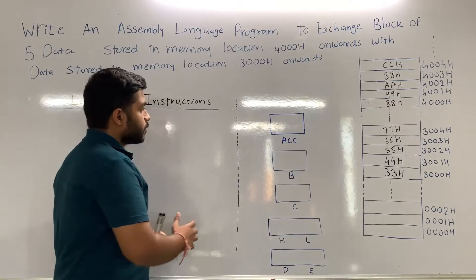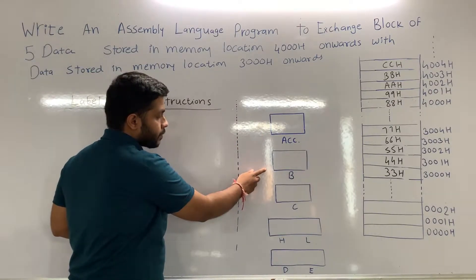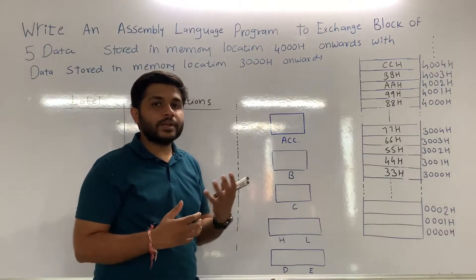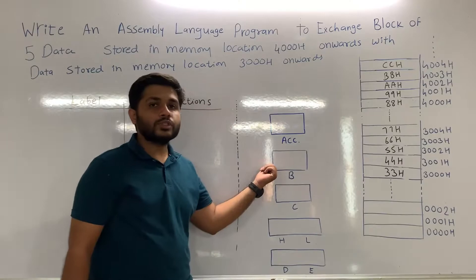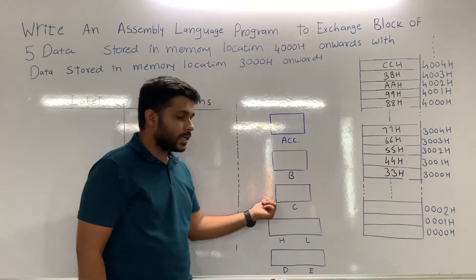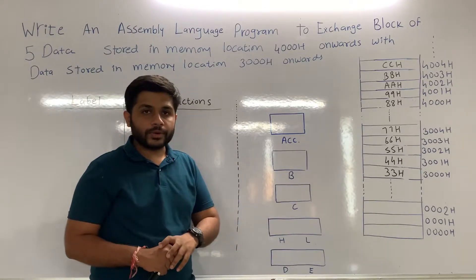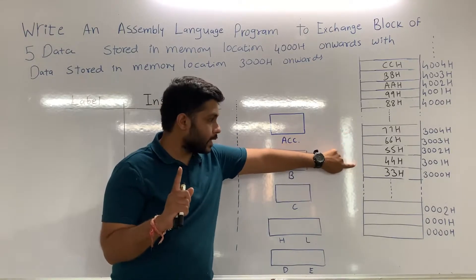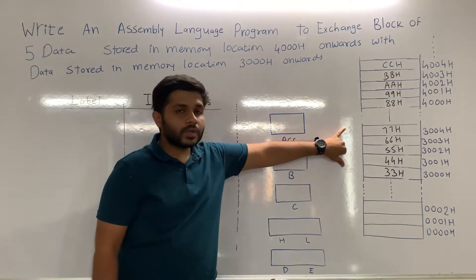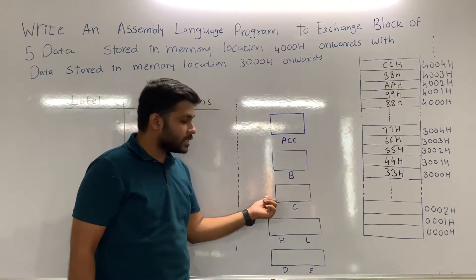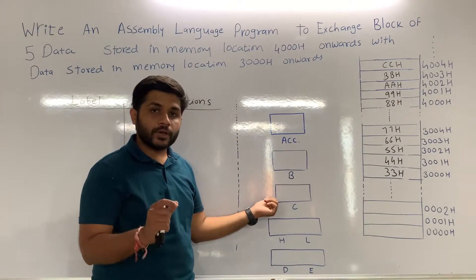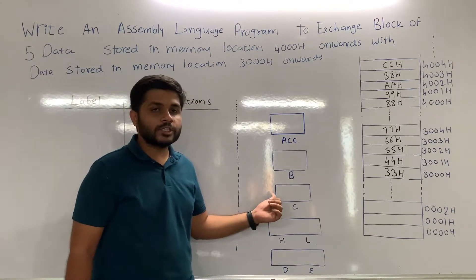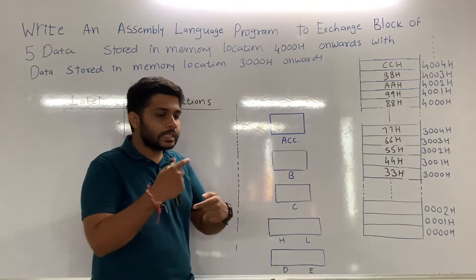For this program we will use these registers. The first one is the accumulator. Then there is register B — we will use register B as a temporary register. To exchange data we need some temporary storage, so register B is used to store the data temporarily. After that, register C will be used as a counter. We have to exchange a block of 5 data, so we will initialize register C with 5. After exchanging one data the counter will be decremented to 4, then 3, and so on.